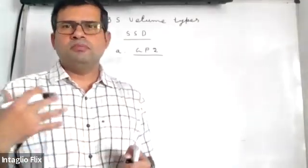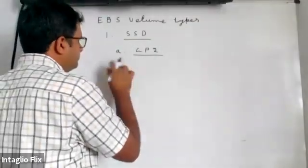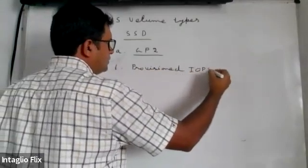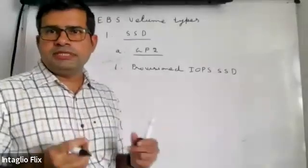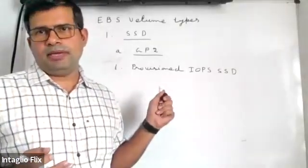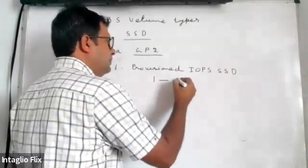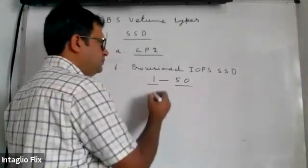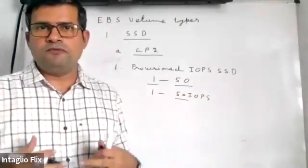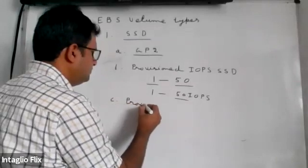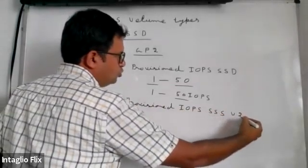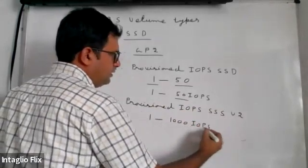If you need more IOPS, you can go with Provisioned IOPS SSD. In this case, without increasing the size of the volume, you can increase IOPS only. You will not be paying for storage — you pay additionally only for the IOPS. It is available in a 1:50 ratio, meaning for every 1 GB you can get 50 IOPS.